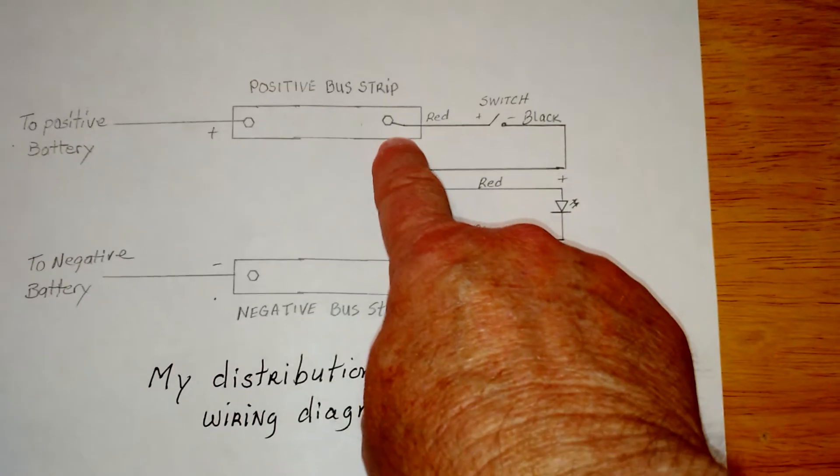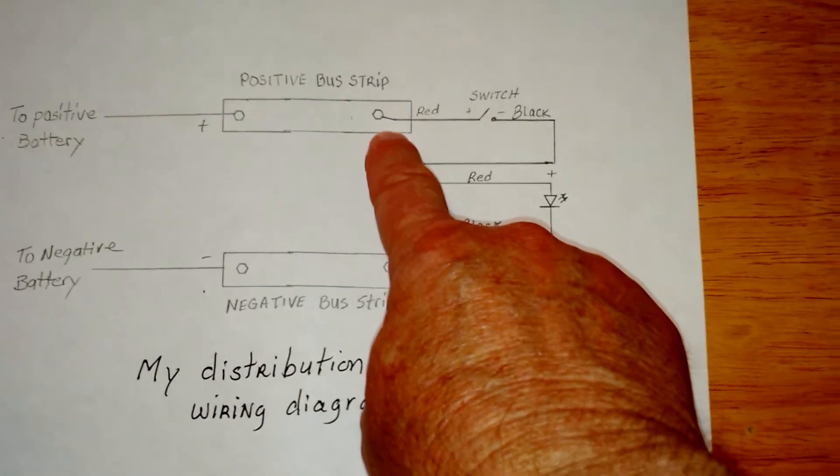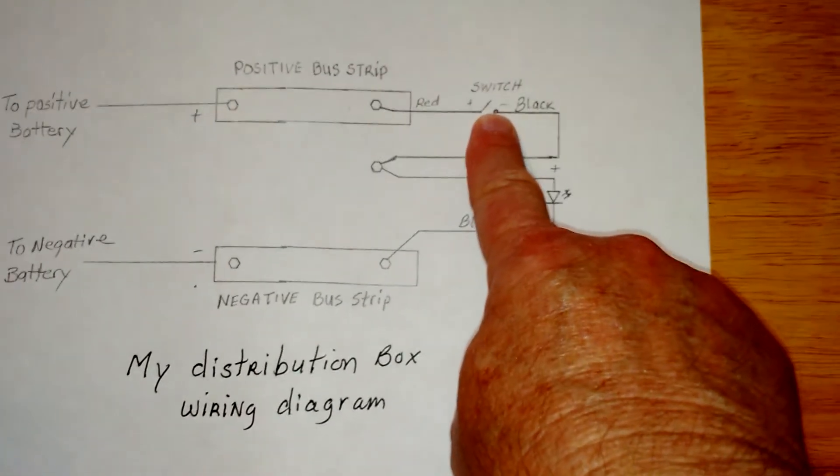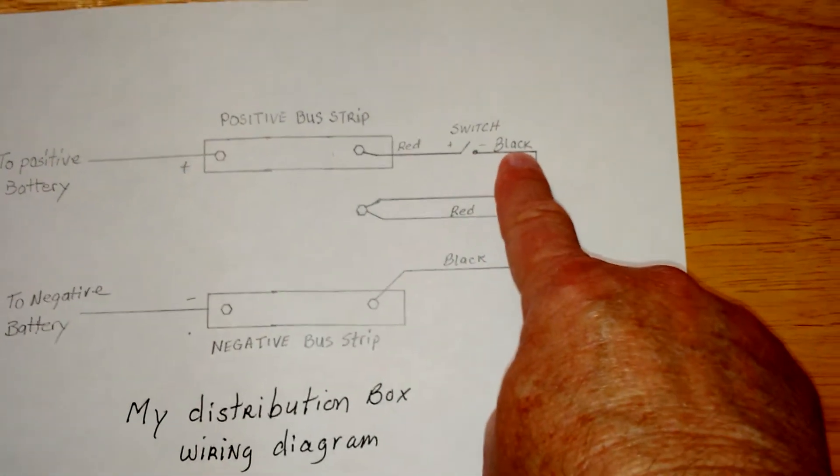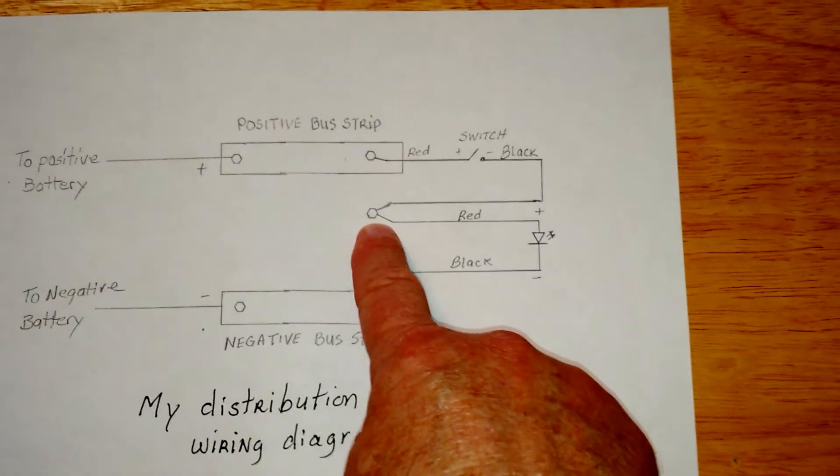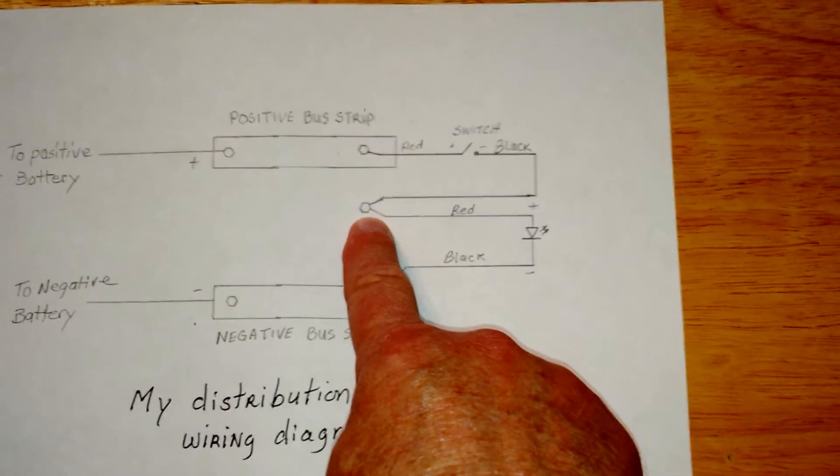On the other side, I have a connector coming off the strip, and I have a red wire going to one side of my switch. Then I have a black wire coming from the other side of the switch going to a center tap located in the middle of the power distribution box.